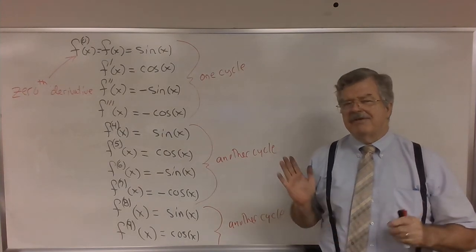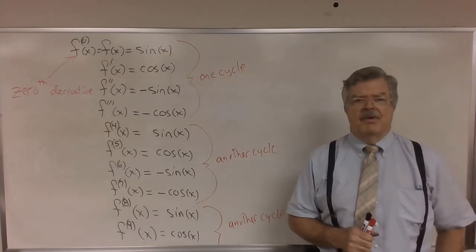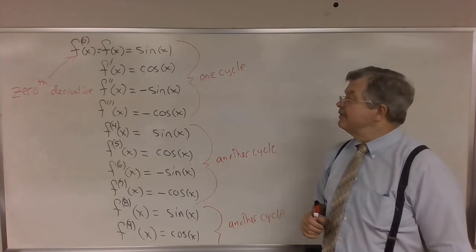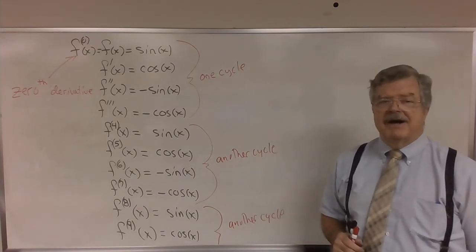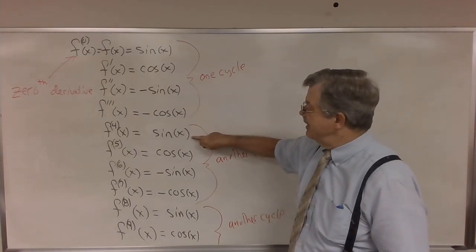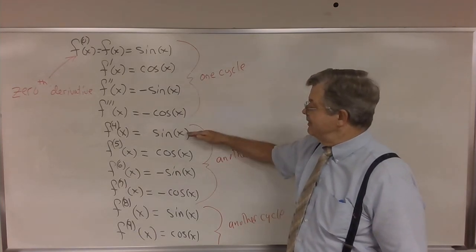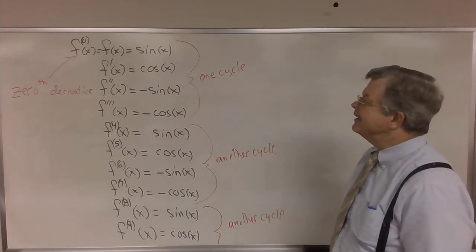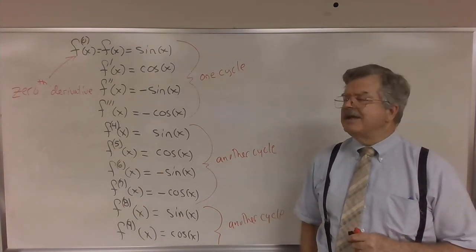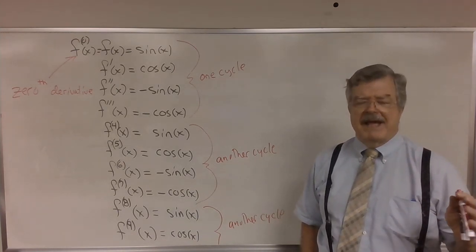So that gives us an easy way to compute higher order derivatives of sine and cosine. The derivatives of cosine follow a pattern as well: cosine, negative sine, negative cosine, sine, cosine. Sines and cosines are kind of unique in this respect — their derivatives follow a cyclic pattern.